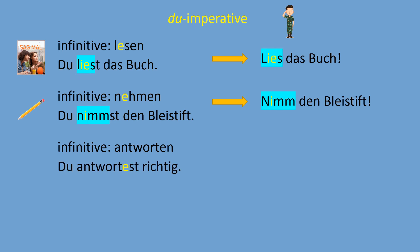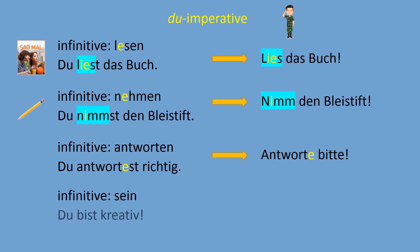Sometimes in the du-form we need to add an extra '-e' for better pronunciation. For example, the verb 'antworten' — to answer. The du-form is 'du antwortest' with an inserted 'e' between 't' and 'st.' When we create the command, we keep that 'e': 'Antworte!' — answer! Finally, the verb 'to be' has a completely special form for the du-imperative — just memorize it. Instead of using 'bist,' we use 'sei': for example, 'Sei gesund!' — be healthy!